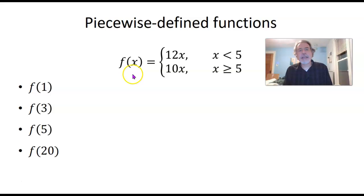Here we have an example of a piecewise defined function: f of X equals 12X if X is less than 5, and 10X if X is greater than or equal to 5. So what this function does to a number that you put in for X depends on whether that number is less than 5 or greater than or equal to 5. It does one thing if the number is less than 5, it does another thing if it's greater than or equal to 5.